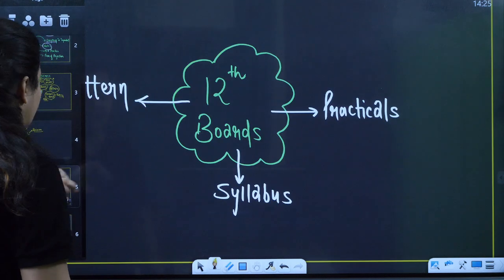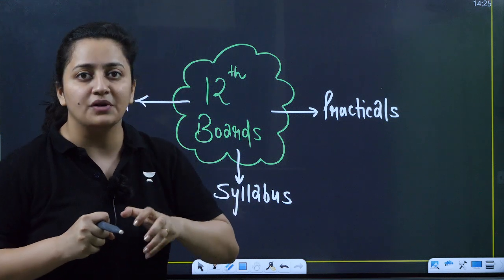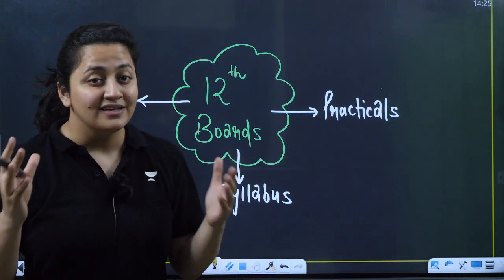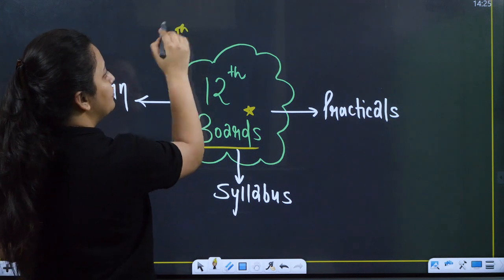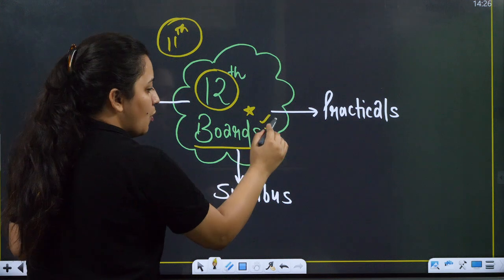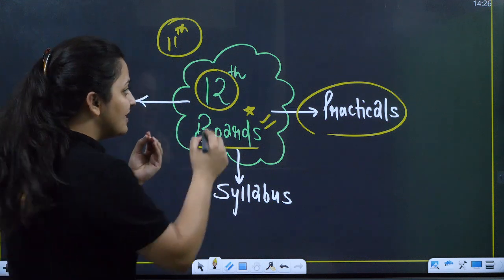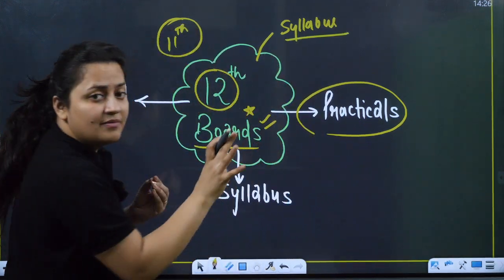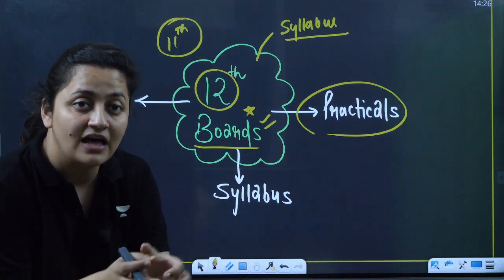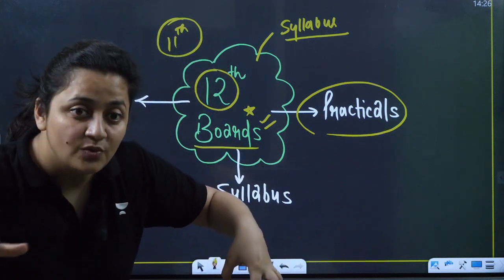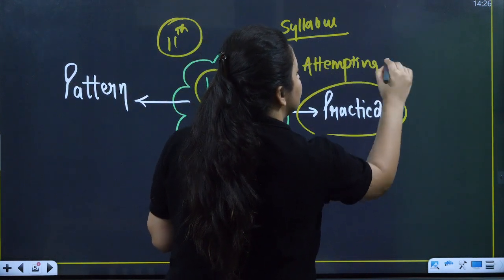If you are in Class 12 with board exams, the pressure of scoring 90+ or 95+ is real. You also need the Class 11 syllabus in your head while completing Class 12, with boards and practicals coming up. But again, the common factor is syllabus — understand the concepts, then practice MCQs and write theory. Your paper-attempting strategy should be strong — that is what will make the difference.